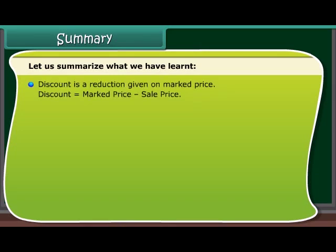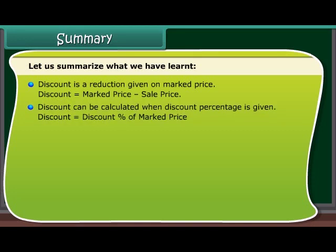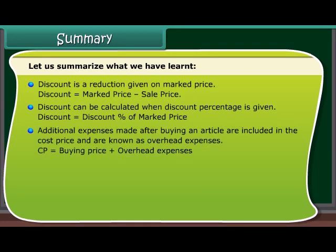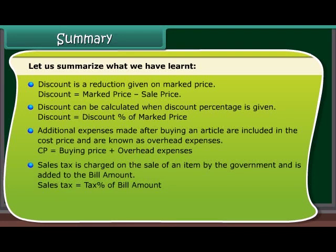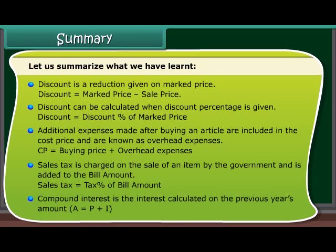Summary: Discount is a reduction given on marked price. Discount is equal to marked price minus sale price. Discount can be calculated when discount percentage is given: discount is equal to discount percentage of marked price. Additional expenses made after buying an article are included in the cost price and are known as overhead expenses. CP is equal to buying price plus overhead expenses. Sales tax is charged on the sale of an item by the government and is added to the bill amount. Sales tax is equal to tax percentage of bill amount. Compound interest is the interest calculated on the previous year's amount, where A equals P plus I.